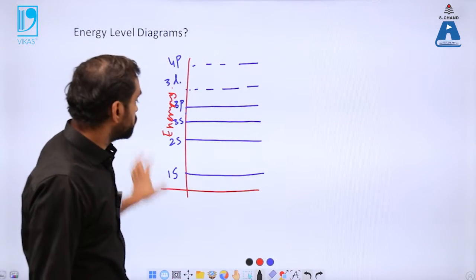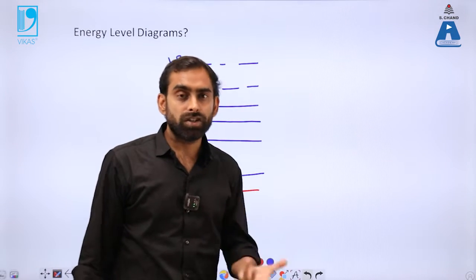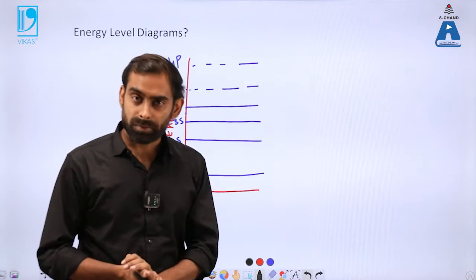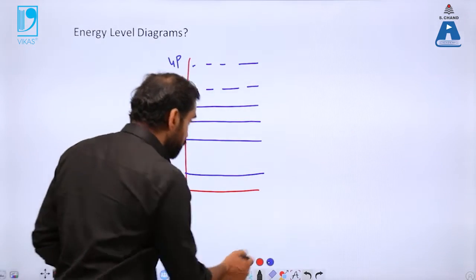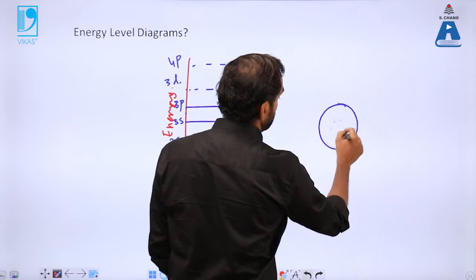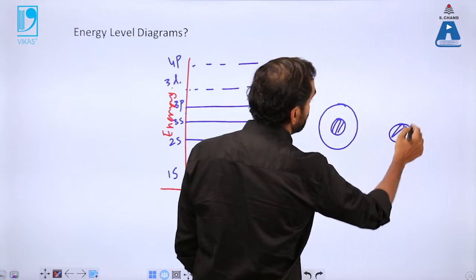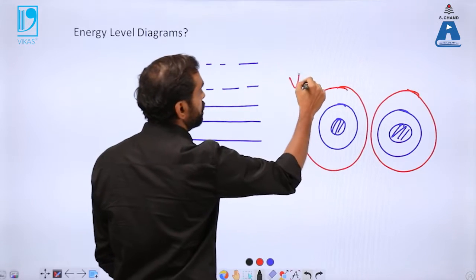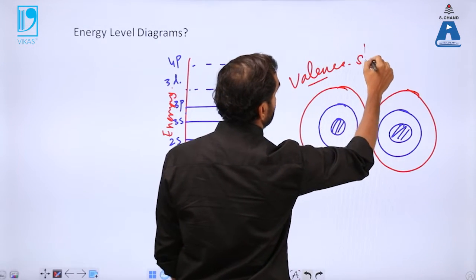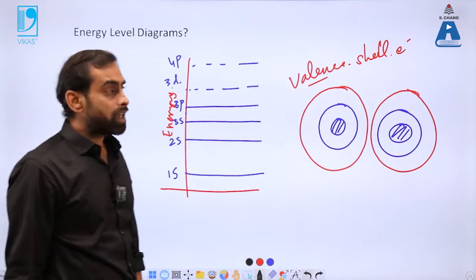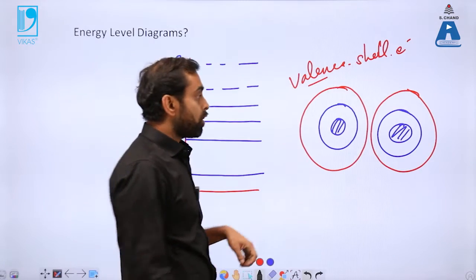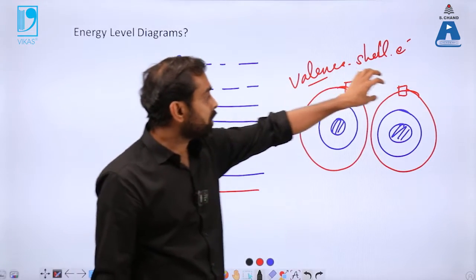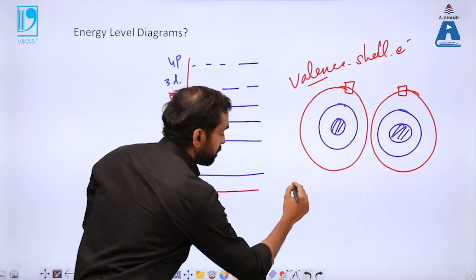We are more concerned about energy diagrams for molecules — what happens when atoms combine and how to draw those energy diagrams. We should remember that when two atoms combine, the inner electrons generally do not participate; only the outermost, or valence shell, electrons participate. So it is important to consider the energies of these valence shell atomic orbitals.